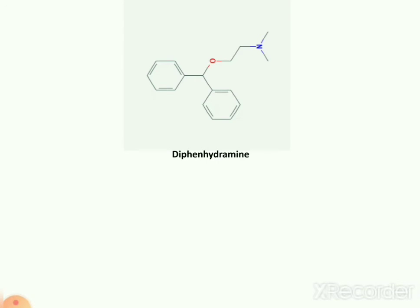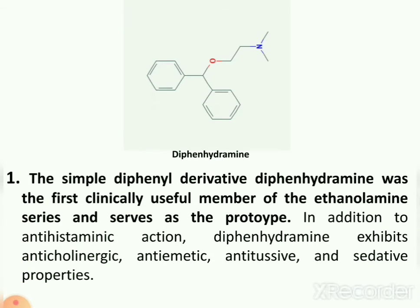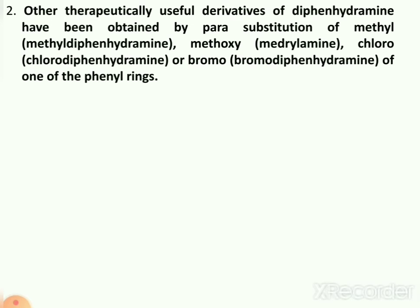Next I will discuss the Structure Activity Relationship of Diphenhydramine. Diphenhydramine, the simple diphenyl derivative, was the first clinically useful member of the Ethanolamine series and served as the prototype agent. In addition to antihistaminic action, diphenhydramine exhibits anticholinergic, antiemetic, antitussive, and sedative properties. Other theoretically useful derivatives have been obtained by para-substitution of methyl, methoxy, chloro, or bromo on one of the phenyl rings.